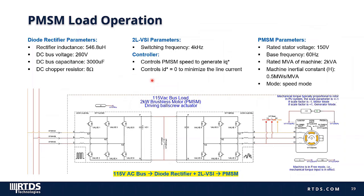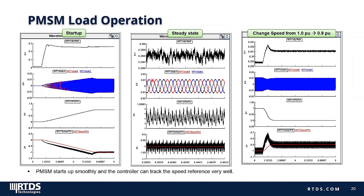There is a PMSM load connected to the main AC bus. The PMSM is rated at 60 Hz, so a diode rectifier and a two-level voltage source inverter are used to convert the 115 V 400 Hz AC bus to 150 V at 60 Hz. The PMSM is controlled in speed mode. Simulation results show the PMSM operating steadily with effective speed control — when the speed is changed from 1.0 to 0.9 per unit, it tracks the reference very well.